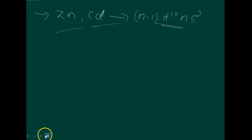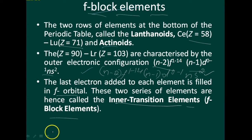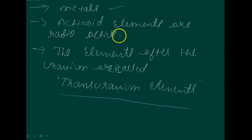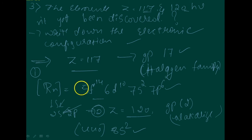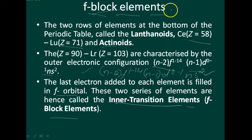You have to write the electronic configuration for zinc and cadmium and some of their properties. Next, f-block elements: the two rows at the bottom are lanthanoids and actinoids, characterized by the outer electronic configuration. Actinoid elements are radioactive. Elements after uranium are called transuranium elements.